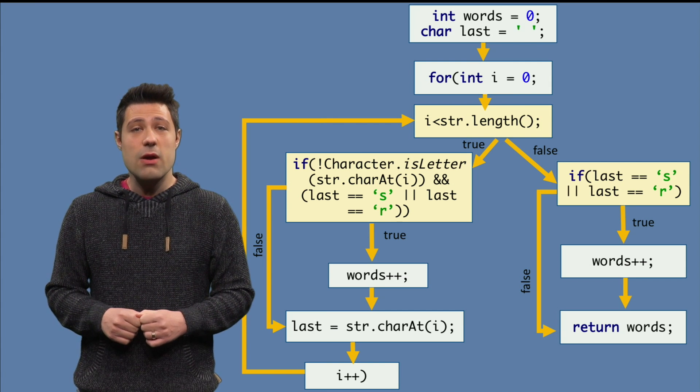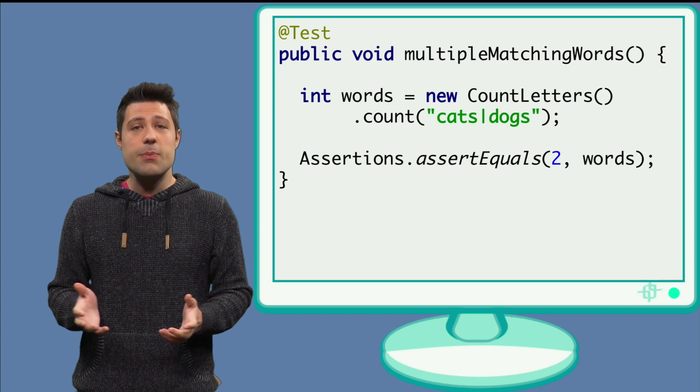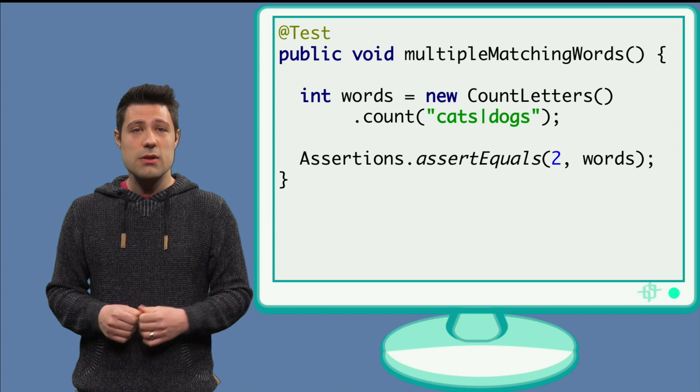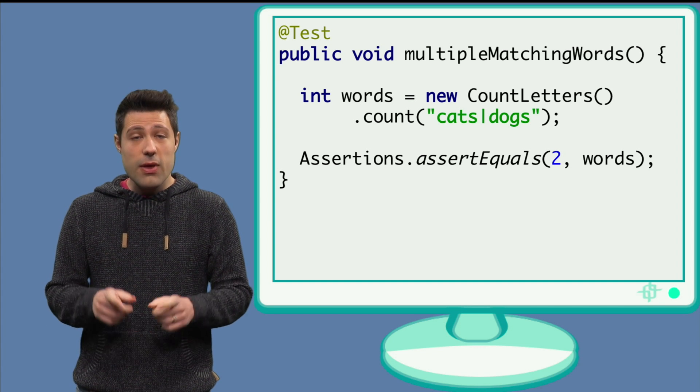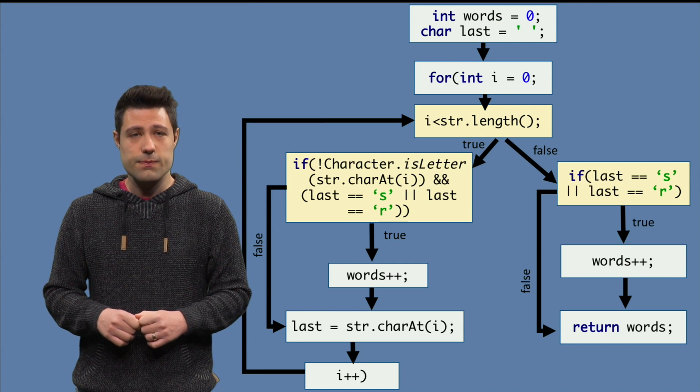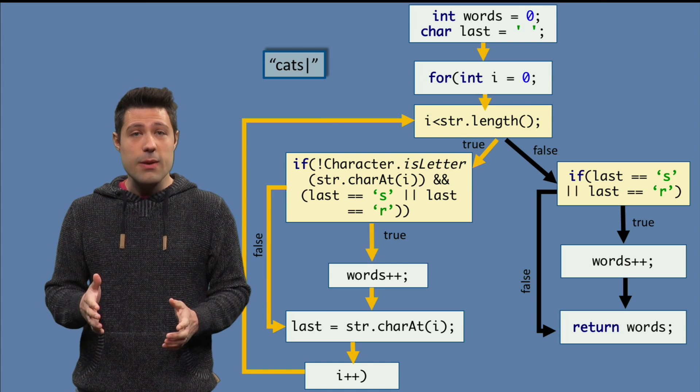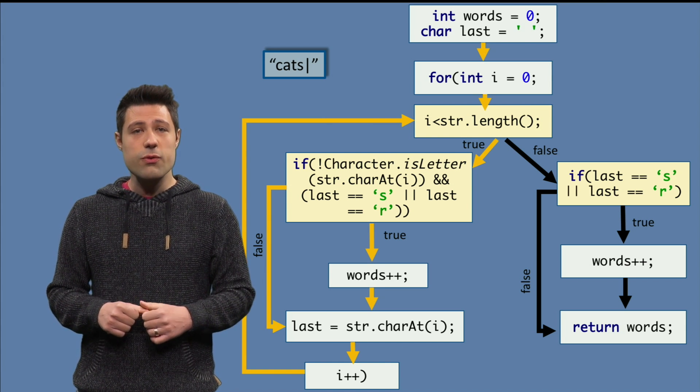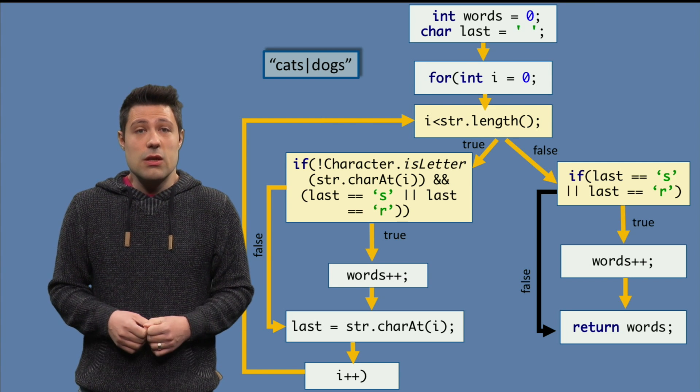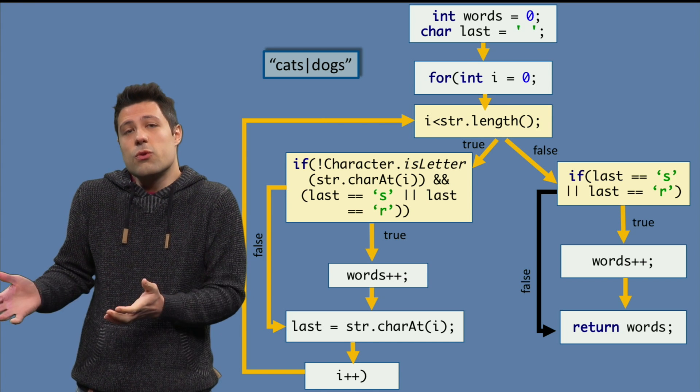Ok, let's get our hands dirty now and write a test that passes cats pipe dogs to the method count and asserts that there are two words, cats and dogs, of course. Take a moment to follow the execution of this test in the control flow graph. We see that after the string cats pipe, the left part of our control flow graph is already covered. Then after dogs, the other part is evaluated to true, which means we cover the true branch.